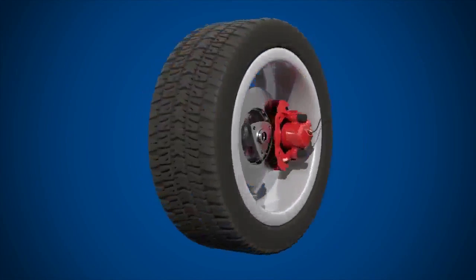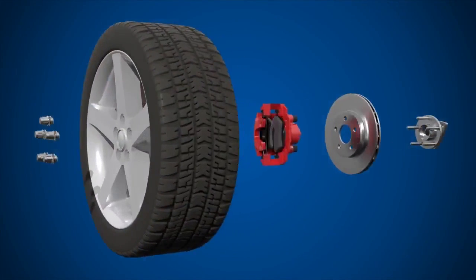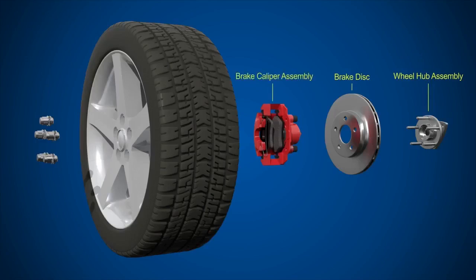Let's take a look at the components found in a typical disc brake system. We have the wheel hub assembly, the brake disc, the brake caliper assembly, the wheel and the wheel nuts.